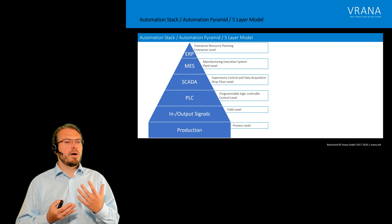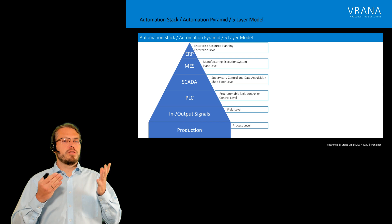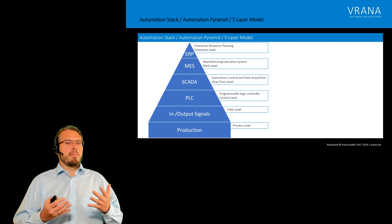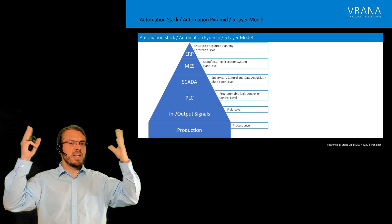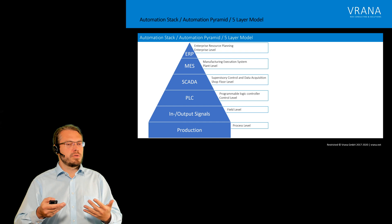Talking about automation, once you start talking about automation, you automatically start talking about the automation stack. It's also called the automation pyramid or the five-layer model. What this model does is, if you want to produce something in an industrial environment in the digital age, you're up there on enterprise level, on your company level, in the enterprise resource planning system.